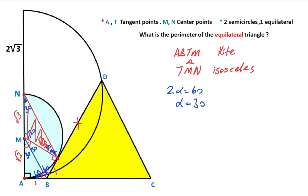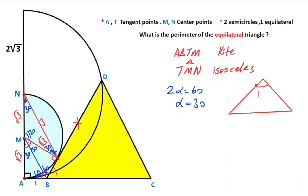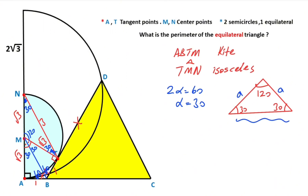If you focus on this triangle, if there is a root 3 opposite the 30 degrees, the side opposite the 120 degrees must equal 3 units. To remind you: if we have an isosceles triangle whose base angles equal 30 degrees, and we call the two equal sides as a, then the base must equal a·√3.